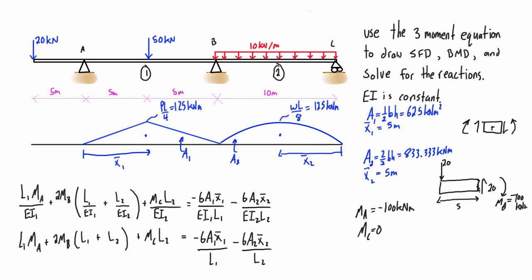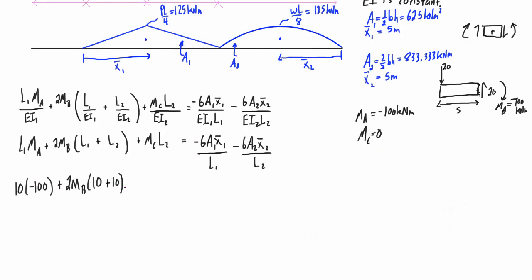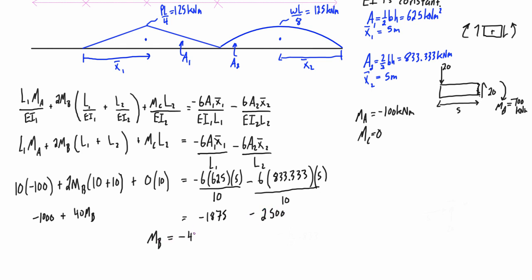If we look at everything in the equation now, we know length one that's 10 meters, Ma we have that, we don't have Mb, and we have Mc, we have L2, we have A and x, so we calculated those up here. If we just come down a little bit we can fill in some of these values and simplify. We'll get negative 1000 plus 40Mb plus zero equals negative 1875 minus 2500. That all reduces to Mb equals negative 84.375. This is the internal moment at B.